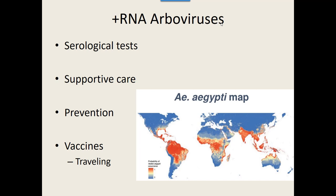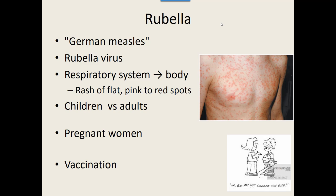Now, moving away from arboviruses — rubella is a virus in the Togaviridae group that is just not spread by insects. Most viruses in the Togaviridae group are spread by insects, but not all, and rubella is one of the exceptions. More commonly known as German measles or the three-day measles, the rubella virus is spread from the respiratory system — it's spread by breathing it in — and once you breathe it in, it spreads out to the body.